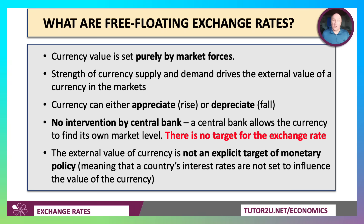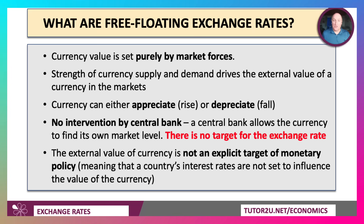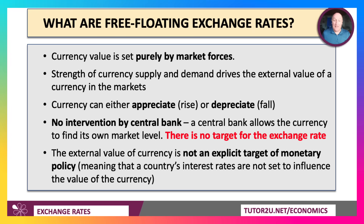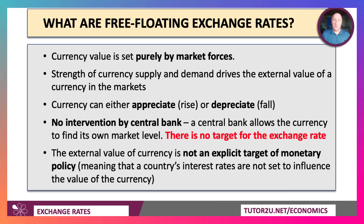In a free floating system, there's no intervention by the central bank. The Bank of England, for example, allows the pound to find its own level, its own market equilibrium — it doesn't intervene directly to try to manipulate or influence the exchange rate. And hence there's no target for the exchange rate. The exchange rate is important as part of economic policy, but there's no target for it. That means that interest rates — the base rate, for example, in the UK — can be set to achieve other objectives, such as controlling inflation.